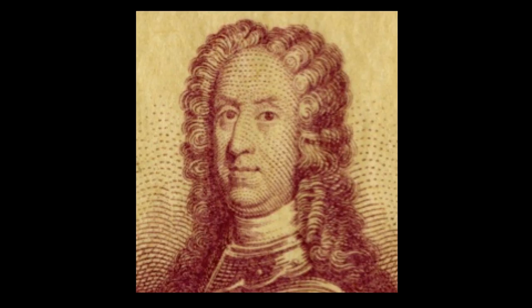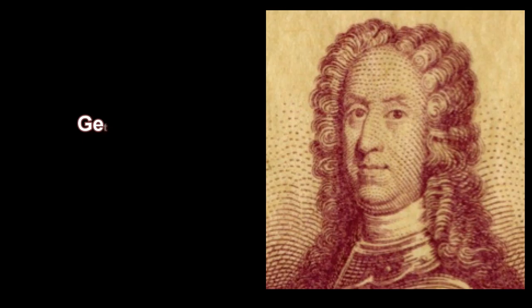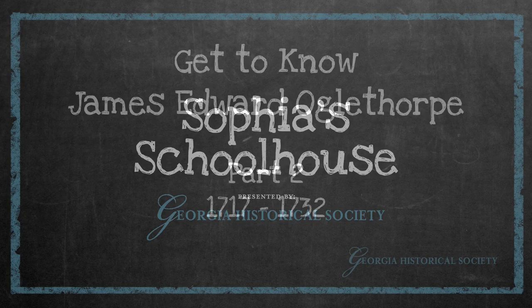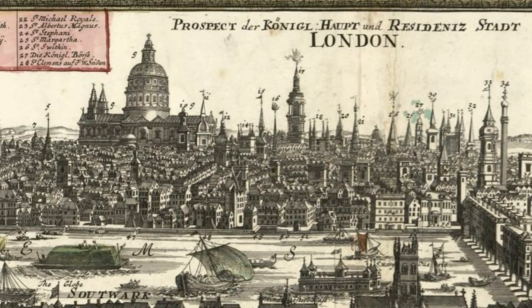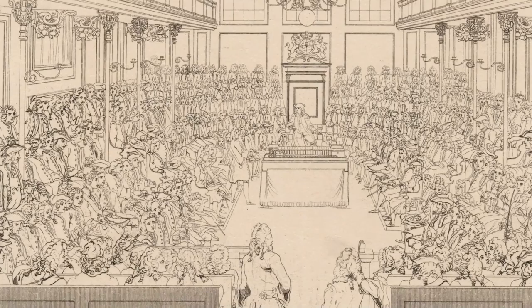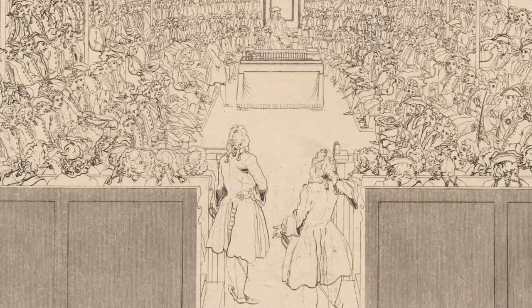Maybe you've heard that James Edward Oglethorpe helped found the colony of Georgia, but what do you really know about him? After the Turks were defeated, Oglethorpe returned to England. In 1722, he was elected to the House of Commons, which was, and still is, a legislative body in the British government. Members of the House of Commons are elected to represent the people living in a certain geographic area.